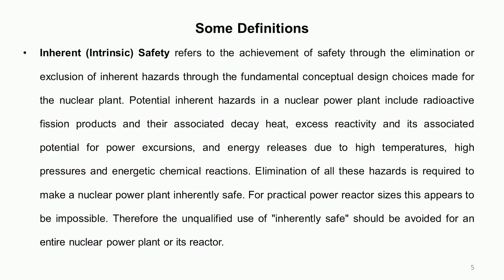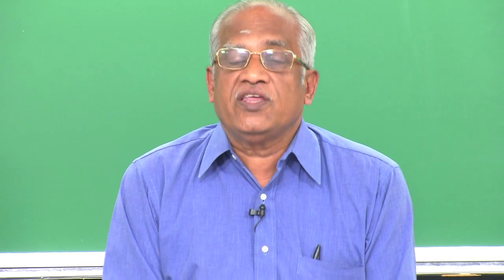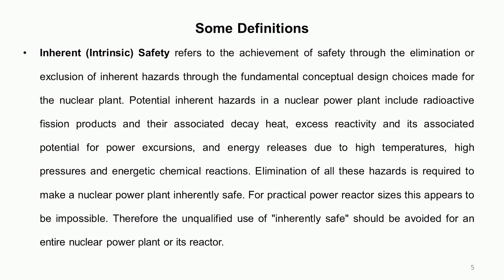The hazards in a nuclear power plant include: fuel failure, radioactive fission products coming out, decay heat needing to be removed, and if the reactor is not shut down or decay heat is not removed, there could be fuel melting, energy releases, and high pressures generated due to the reaction of hot fuel with the coolant. In a practical way, it is not possible to take care of every step. So very carefully, when we say the word 'inherently safe', you cannot say a reactor is inherently safe — for some events maybe it is intrinsically safe.